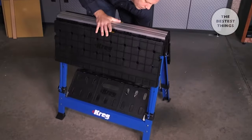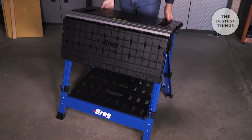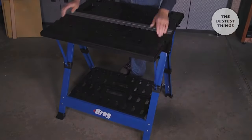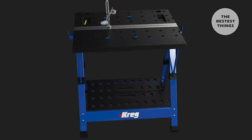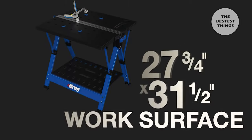Setting up the Mobile Project Center is easy. Just open the legs, then pull the tables up and they automatically lock into place to create a big 27 3/4 inch by 31 1/2 inch surface.